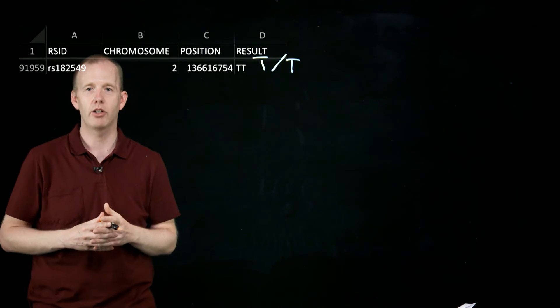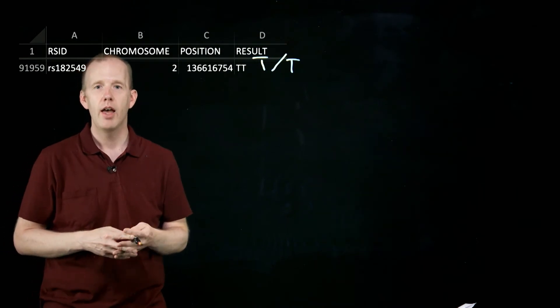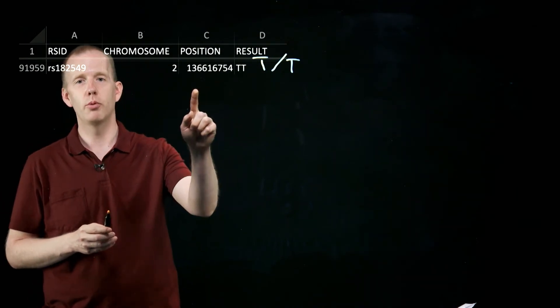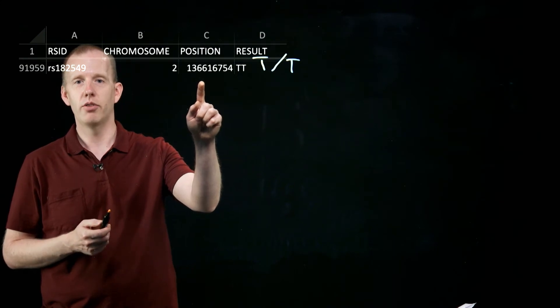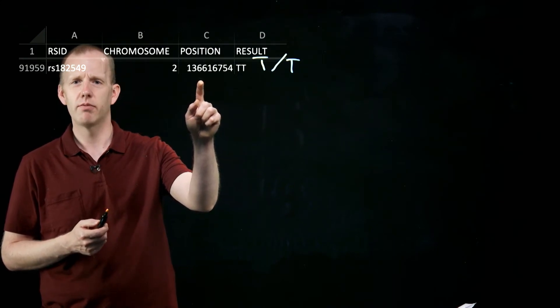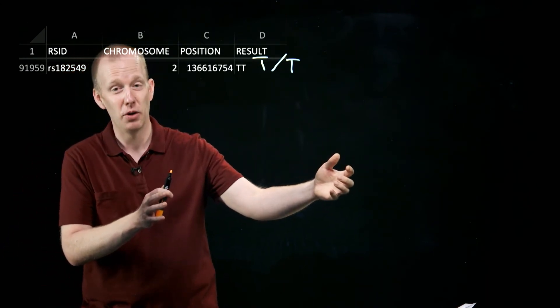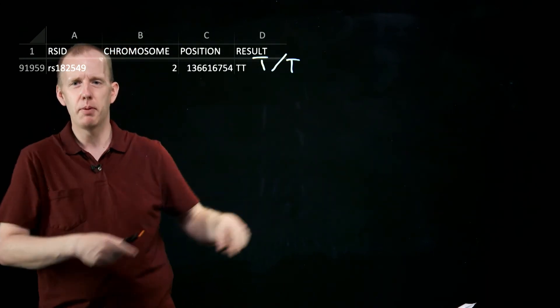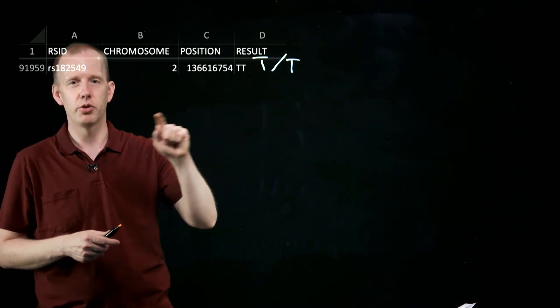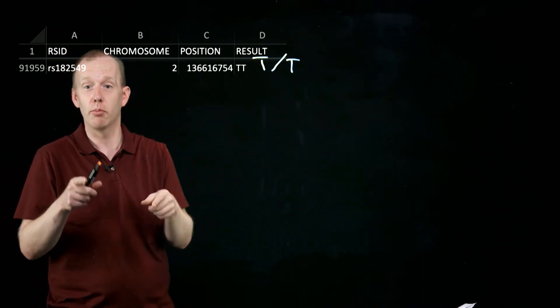the ability to digest lactose into adulthood. And so at this chromosome, on chromosome two, at about, oh my goodness, 136,000, 136 million base pairs from nucleotide one, 136 million base pairs in at that chromosome, this position, I have a T on both of my chromosomes.